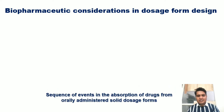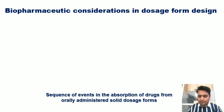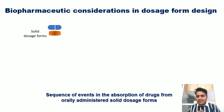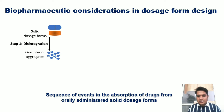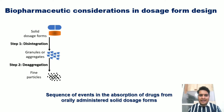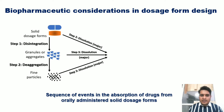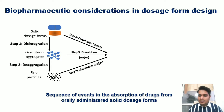Now we will see the different sequence of events in the absorption process of drugs from orally administered solid dosage forms. Taking the example of a tablet: as a first step, the tablet disintegrates into granules or aggregates. Finally, these aggregates de-aggregate into fine particles — a process called de-aggregation — which can be seen at the granules level or at the fine particle level.